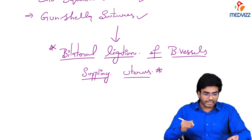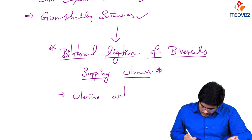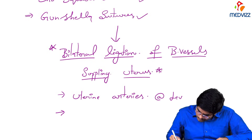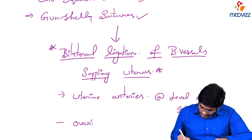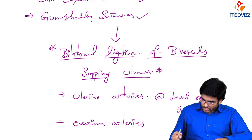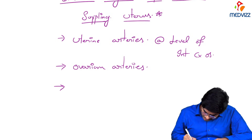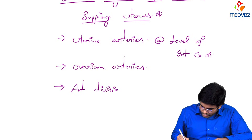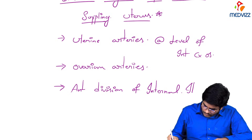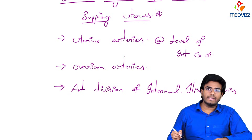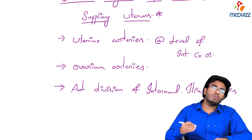You should ligate both uterine arteries at the level of the internal cervical os. You can also ligate the ovarian arteries. For severe bleeding, rather than ligating uterine or ovarian arteries alone, you can ligate the anterior division of the internal iliac arteries.